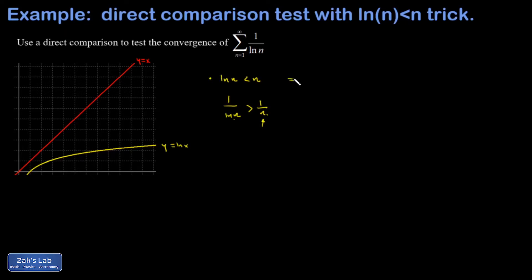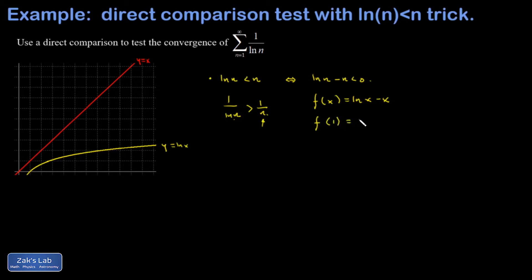This statement is equivalent to saying the natural log of n minus n is less than zero. I'm going to prove this by comparing to a generating function on the set of real numbers. So f of x equals natural log of x minus x, and I want to show that function is less than zero when n is greater than or equal to one. Evaluating at one: the natural log of one minus one equals zero minus one, which is negative one, and that's less than zero.